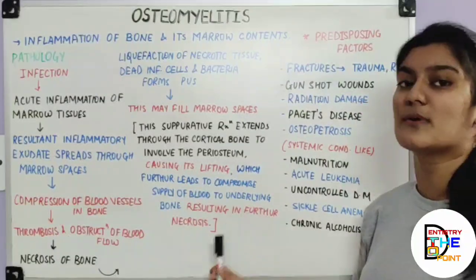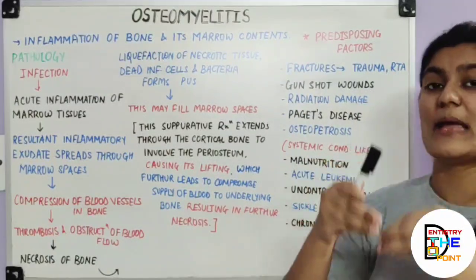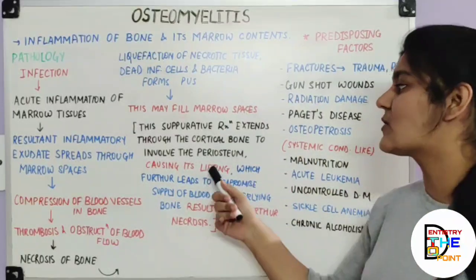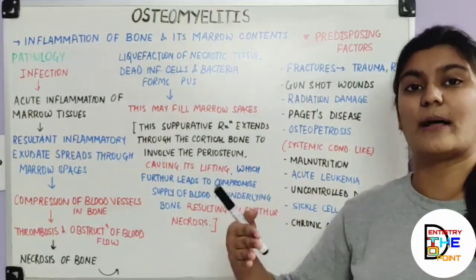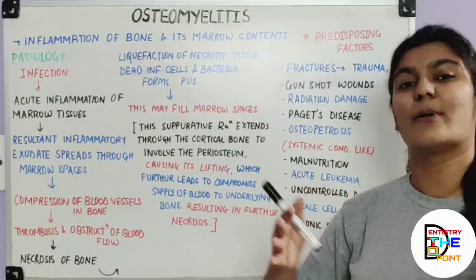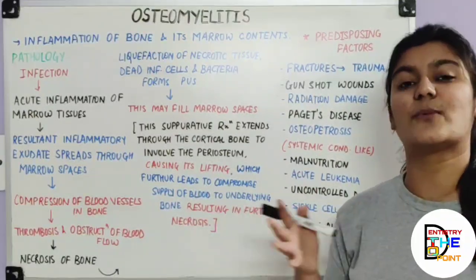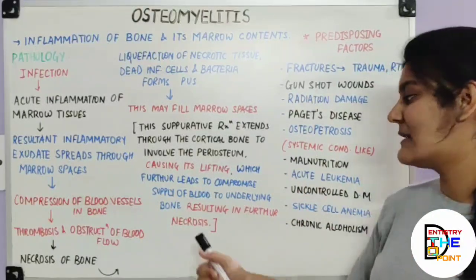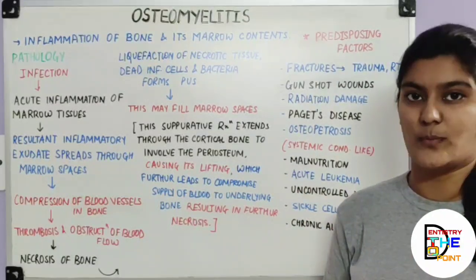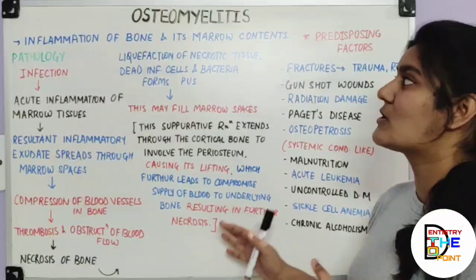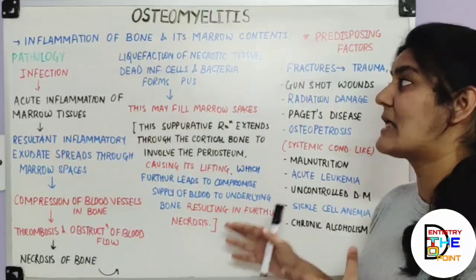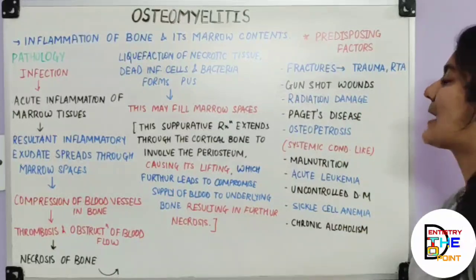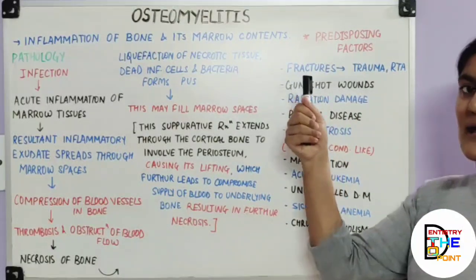When the periosteum is involved and pus causes a bulge, it detaches from the main bulk of the bone, cutting off supply to the bone and leading to further necrosis. This is the complete pathology of osteomyelitis — how inflammation of the bone occurs.